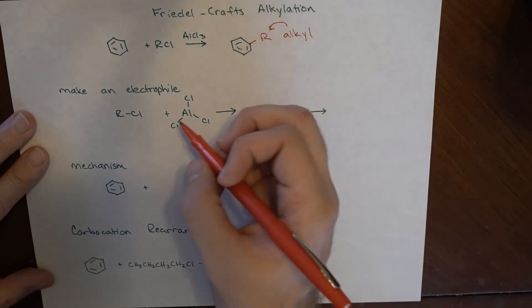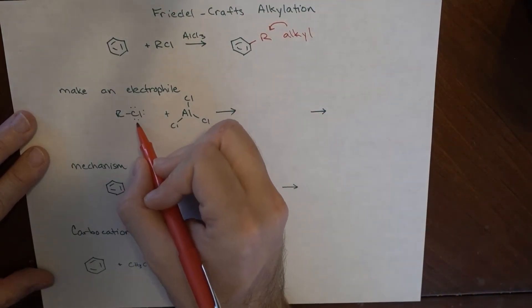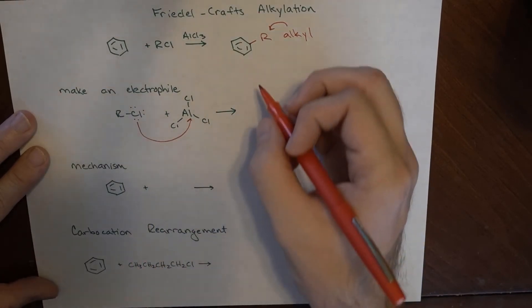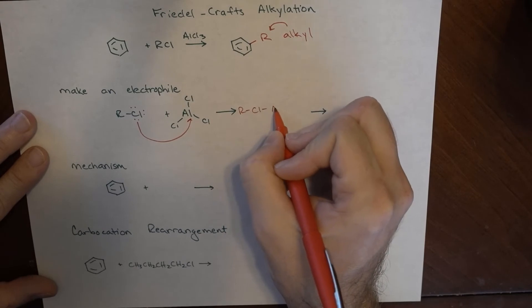So again, the electrons that are around this chlorine, they can fill out the good Lewis acid that's here. So what we have here is this.